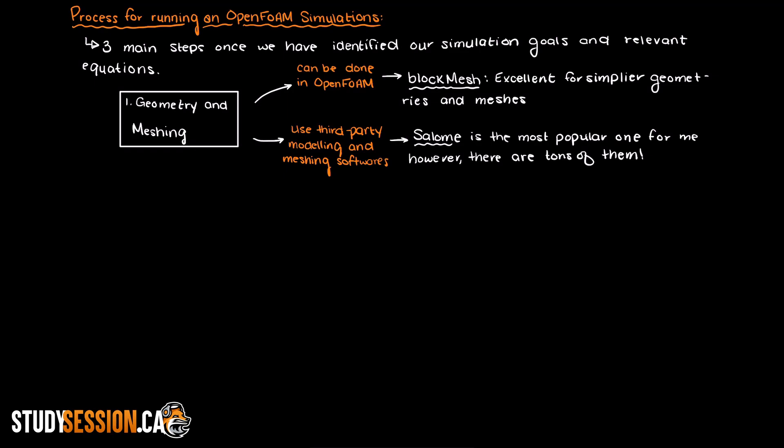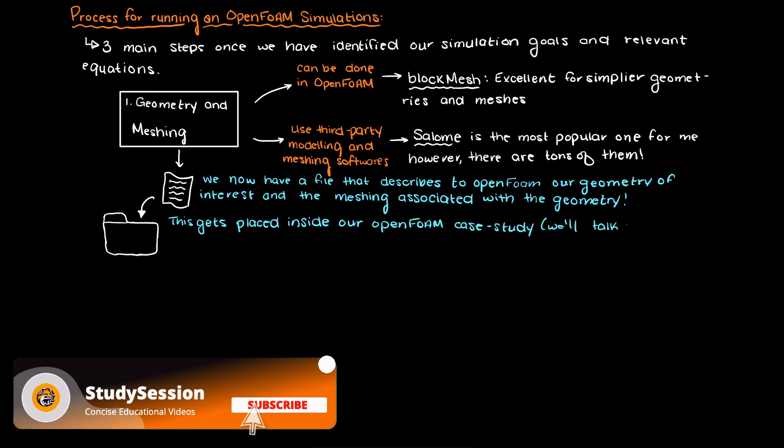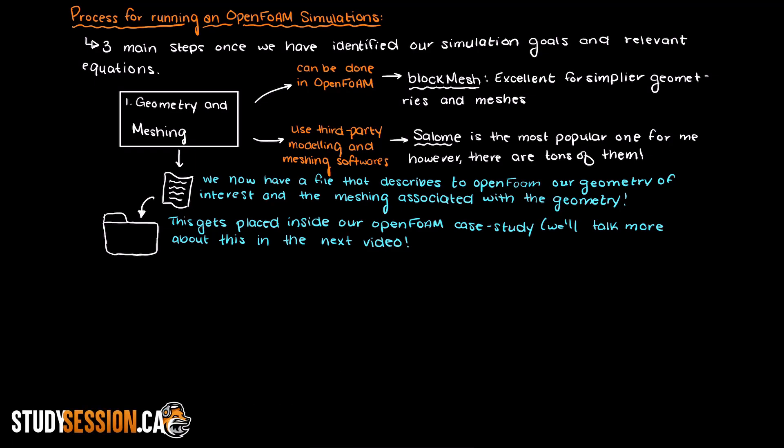Once we have our geometry and meshing completed, we have our discretized geometry information that we can now hand to OpenFoam. So currently we have a file that contains our discretized mesh information that we place inside an OpenFoam case study. We'll talk more about OpenFoam case study setups and what they look like in a future video. For now, just think of it like any other folder on your computer.